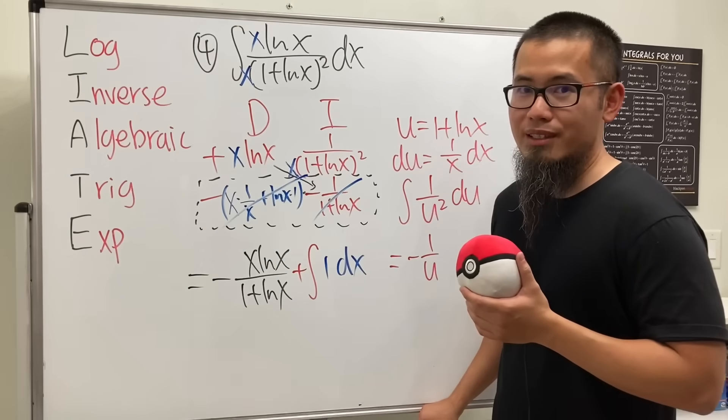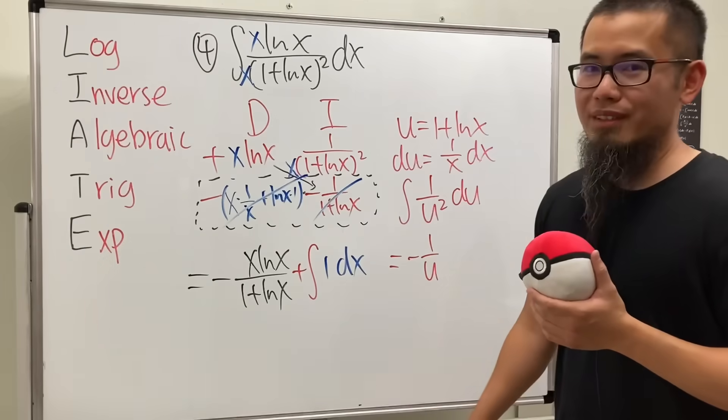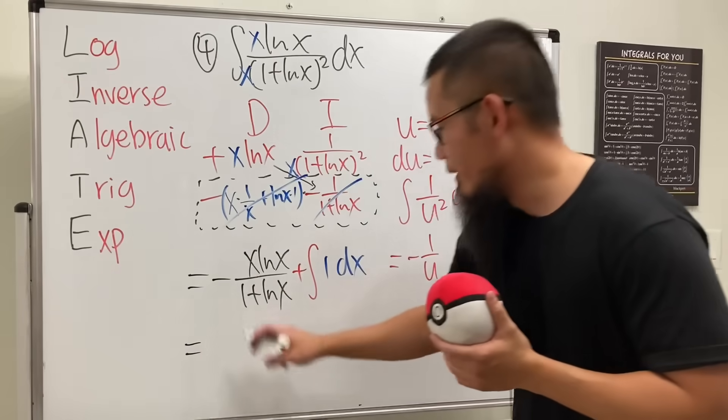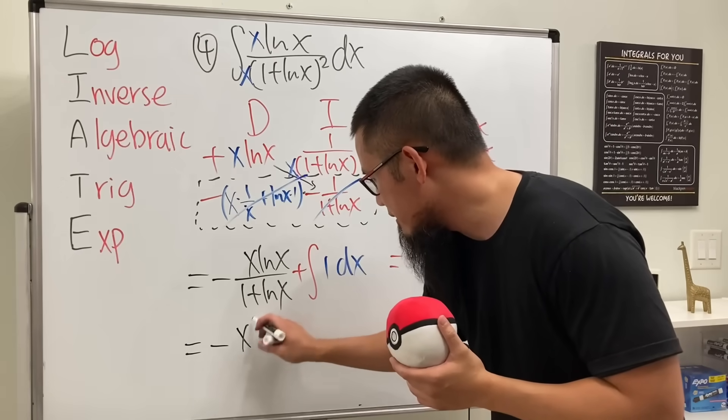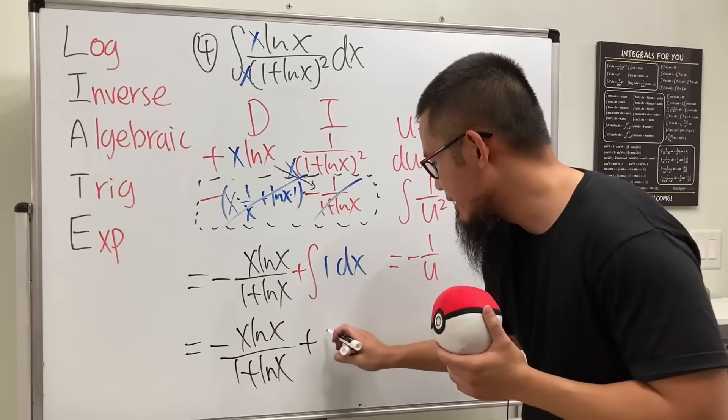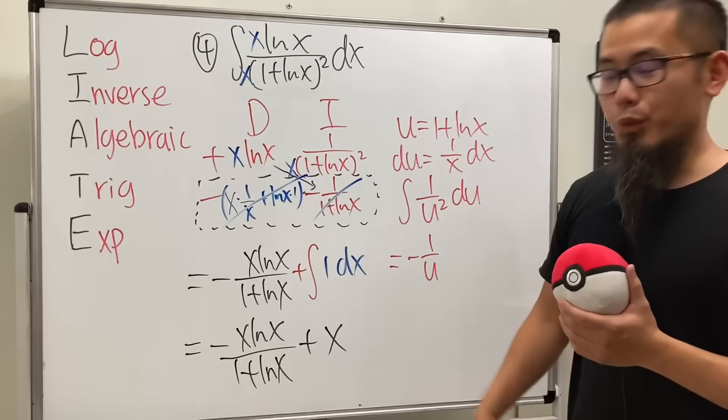Because this right here is just going to be plus x in the integral. So this right here is negative x ln x over 1 plus ln x. And then we just need to add the x. We are done.